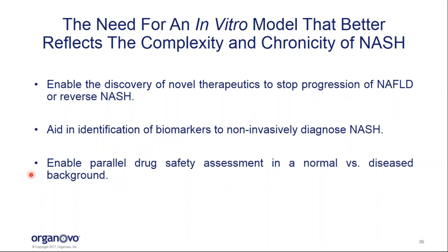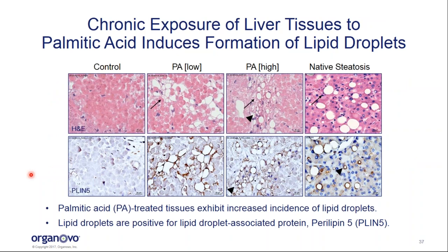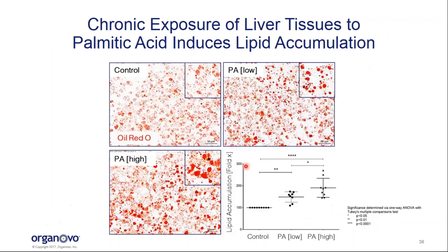To mimic development of the human condition, we induced steatosis via a nutrient overload approach analogous to Western diets. Specifically, treatment of 3D liver tissues with increasing concentrations of the free fatty acid palmitic acid induces the formation of putative lipid droplets that resemble those of native steatosis, as shown by H&E staining. These lipid vesicles are macro and microvesicular in nature and stain positive for the lipid droplet-associated protein perilipin 5. To confirm lipid content in these vesicles, we stained for Oil Red O, and you can see that increasing doses of palmitic acid result in increased lipid accumulation, confirmed by quantification via morphometric analysis.